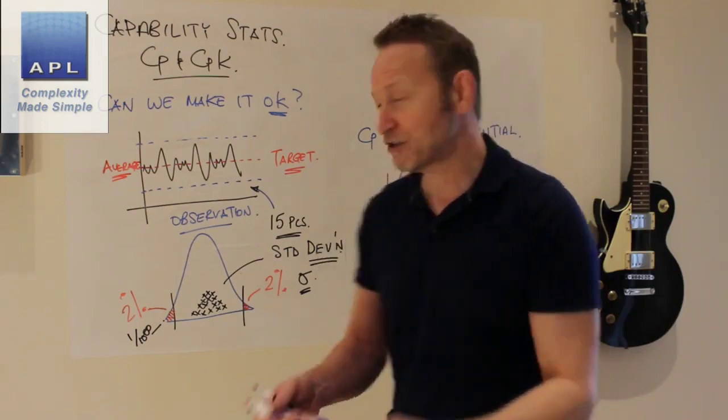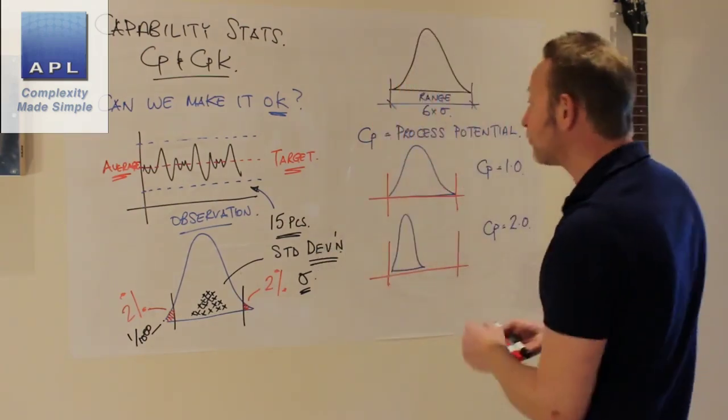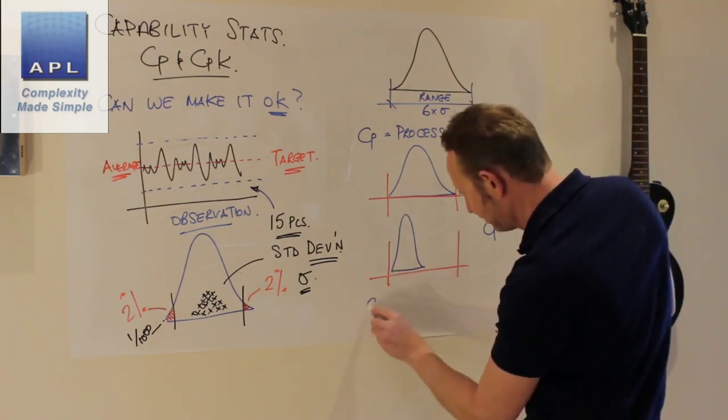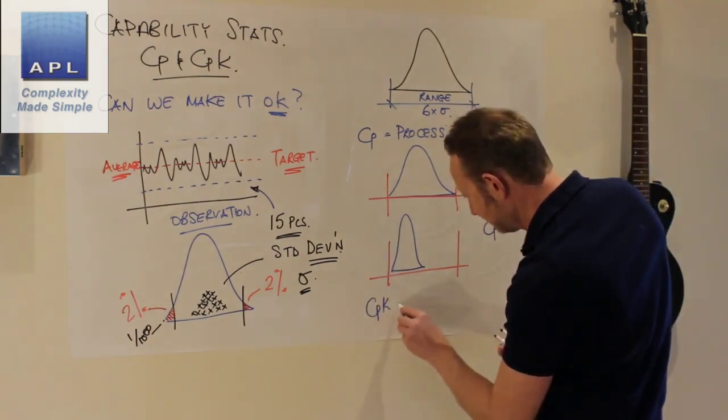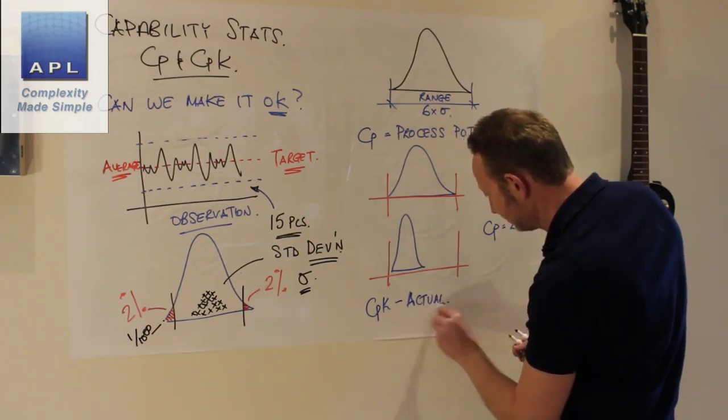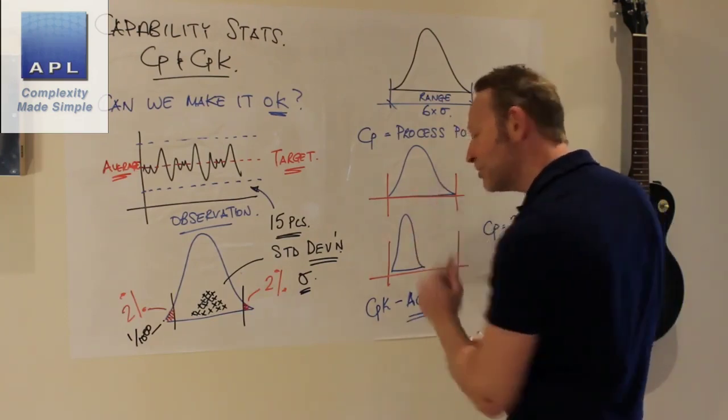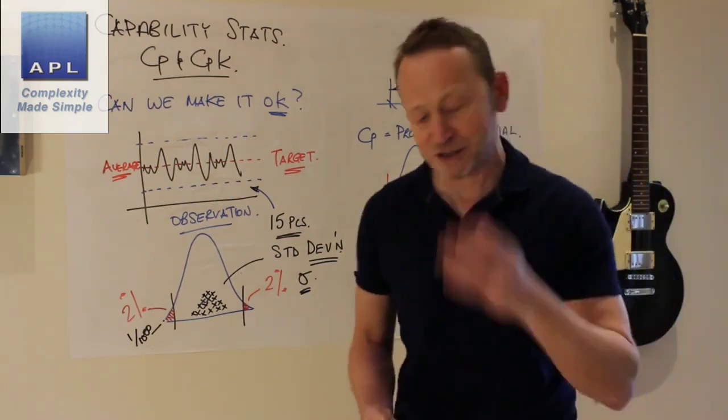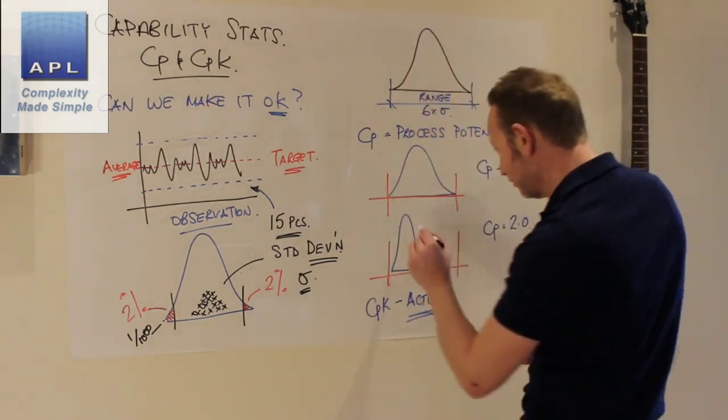Now somewhere we need to take into account: did we hit the target or not? And that's what the CPK is, because what the CPK is: CPK is the actual capability, and it does take into account the center.